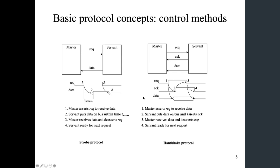The one on the right side is a little bit more complicated — we call it the handshake protocol. Physically, you can see we have one more signal: an ACK, which stands for acknowledgement. We are still transferring data from the servant to master, and the master initiates that transaction. The first step, the master asserts the request signal, as in the strobe protocol.